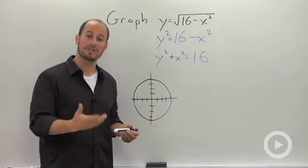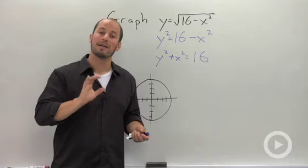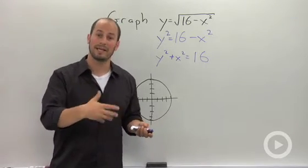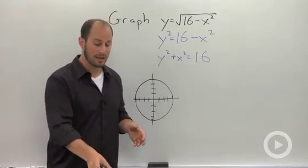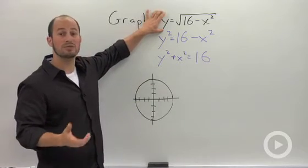So we have our circle centered at the origin, radius 4. The one thing we need to talk about though is domain and range restrictions. We started with an equation that had a square root.